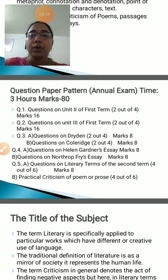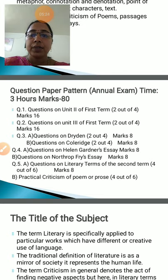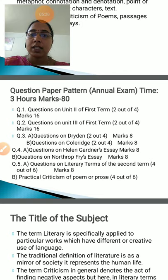Question number three A would be questions on Dryden and question number three B would be questions on Coleridge. Again there are four options for each, and eight marks are allotted.